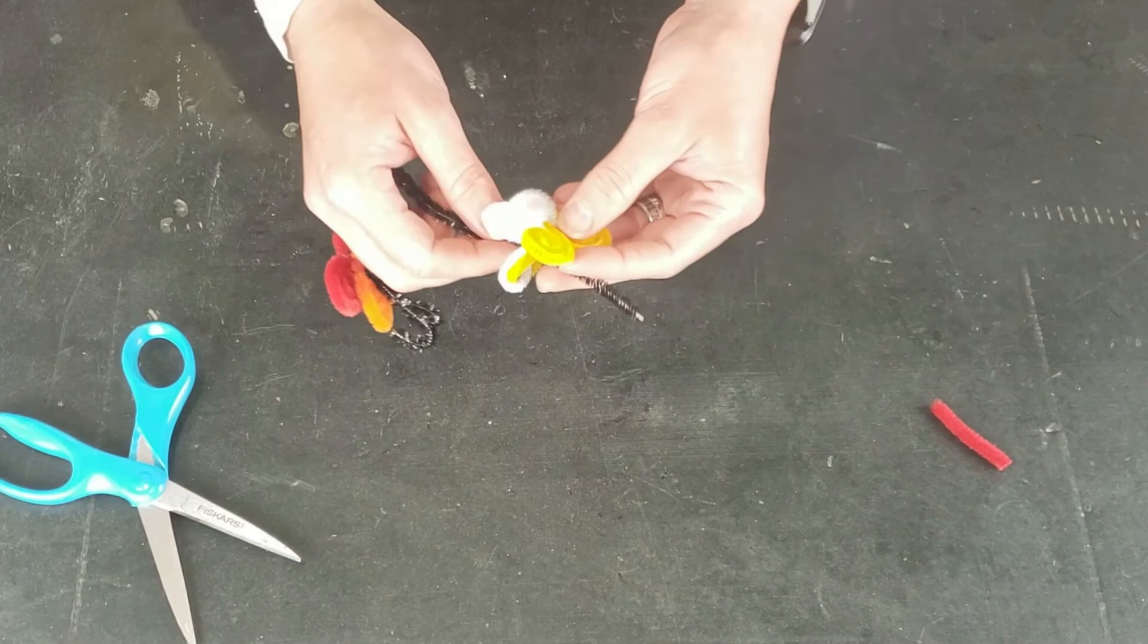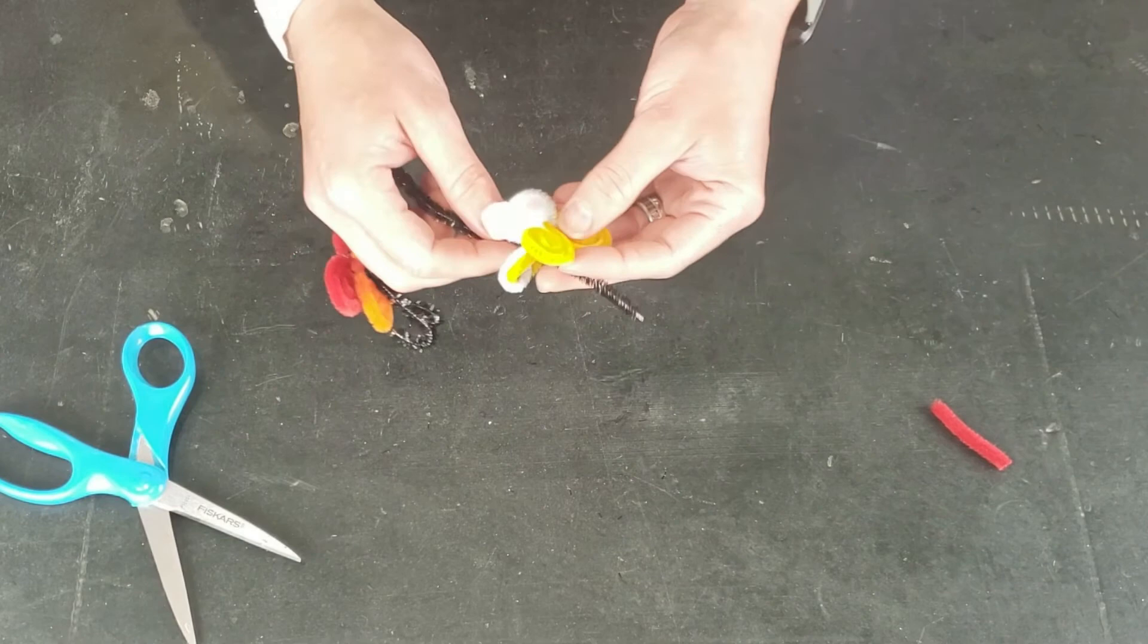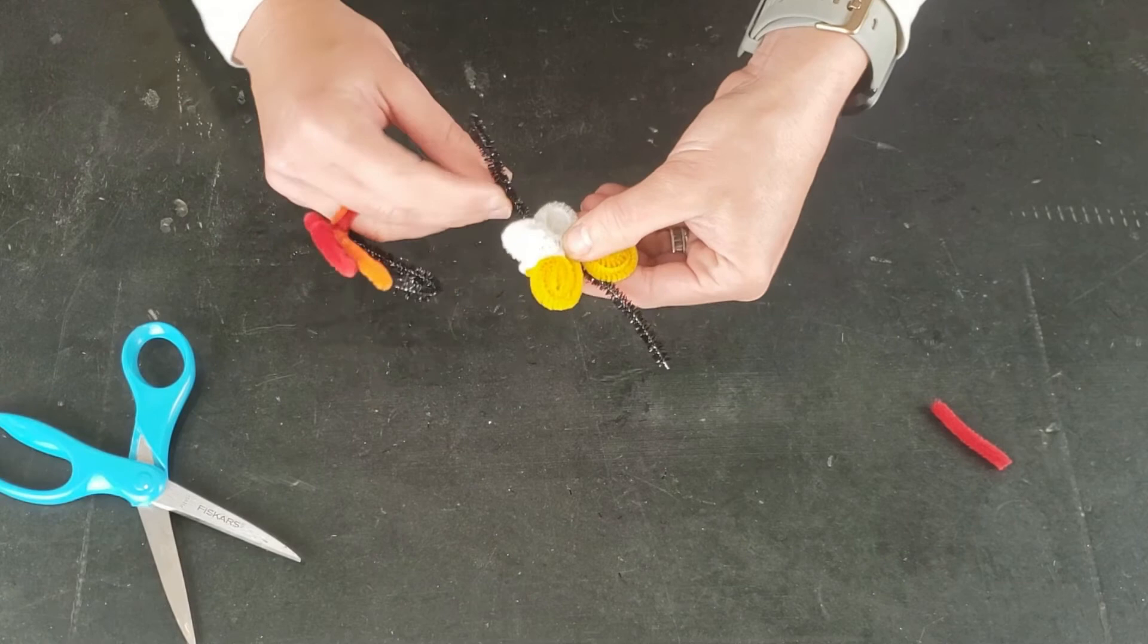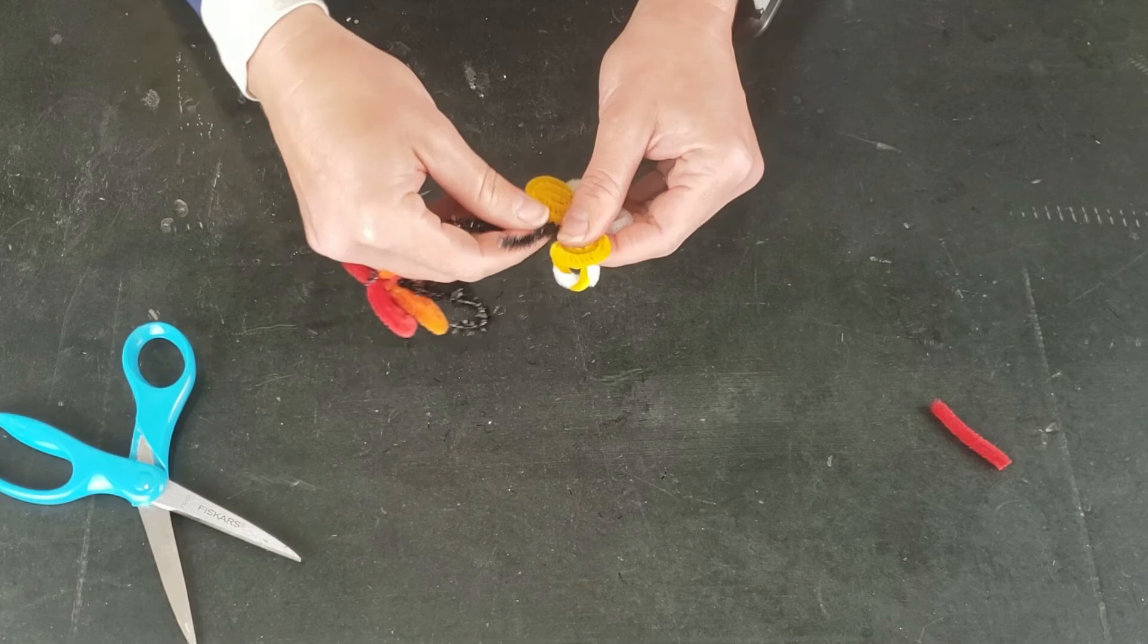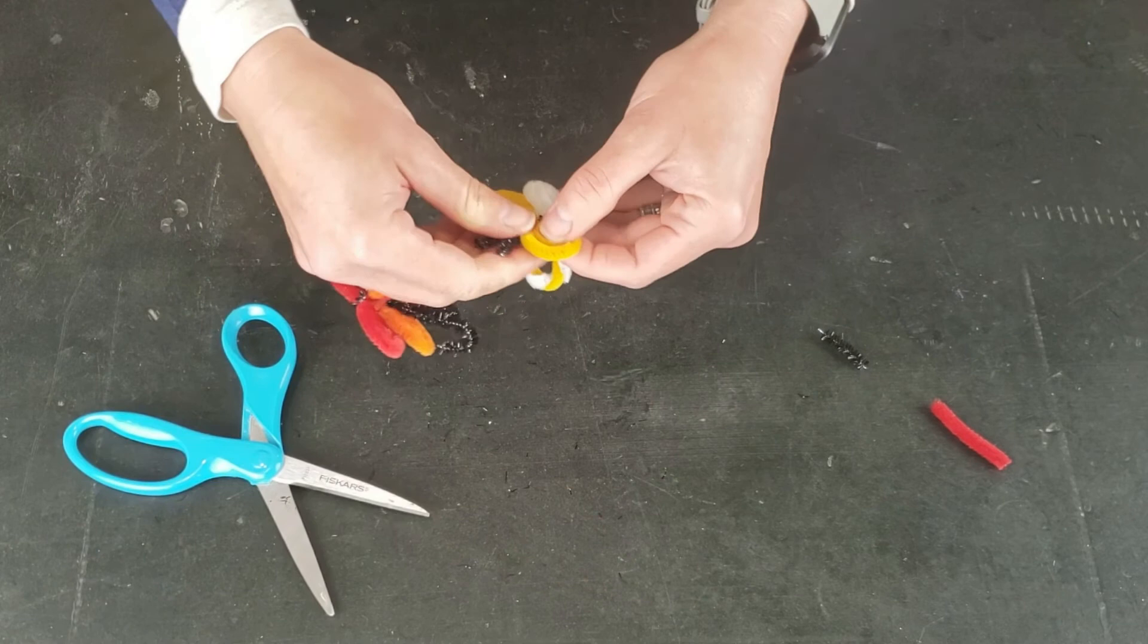Let's do this one since we have it out. Go ahead and slip that neutral colored one up through the center and then twist it together at the base where it meets all of the pieces. And then for this one, I think I'm just going to make shorter antennae, so I'll just go ahead and cut that off just like that.